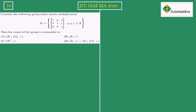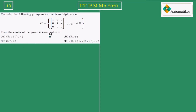The question says: consider the following group under matrix multiplication. We don't need to check why it is a group — it is already given that it's a group. Now, the center of the group is isomorphic to which of the following options? So these are your four options.